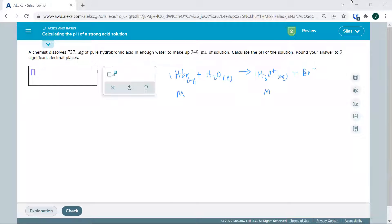So we've got to find molarity. What's the molarity of this HBr? That will tell us. And then pH is equal to the negative log of that concentration.